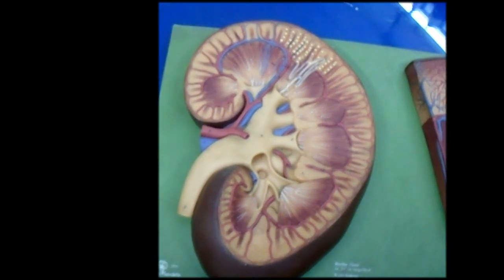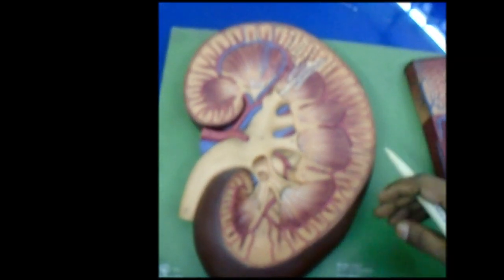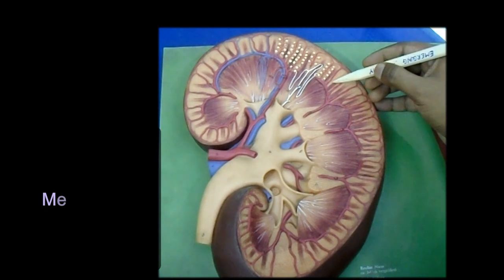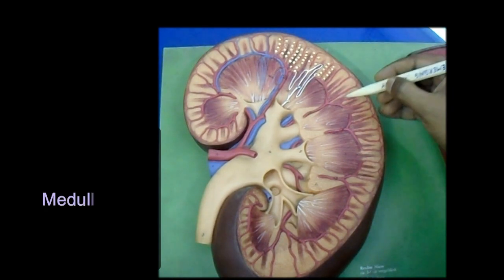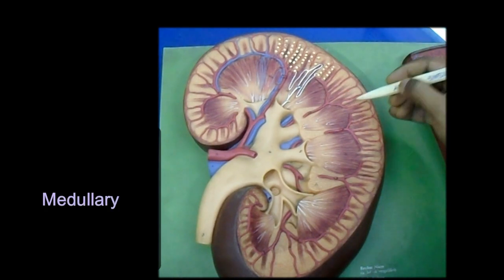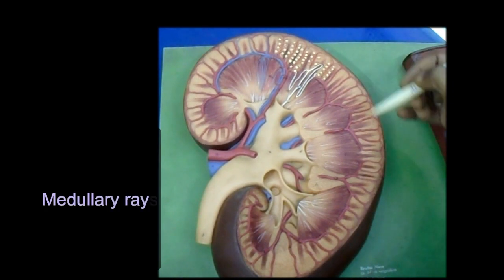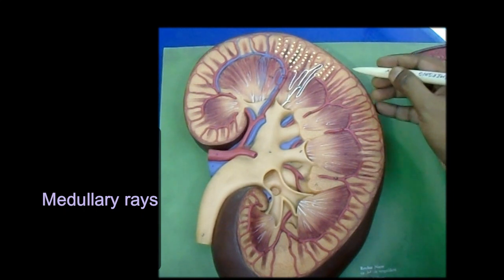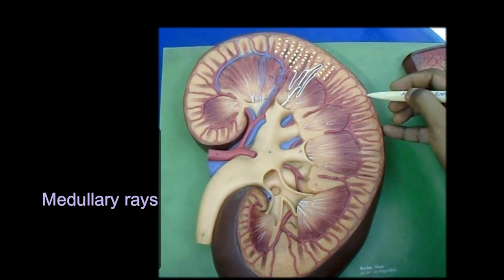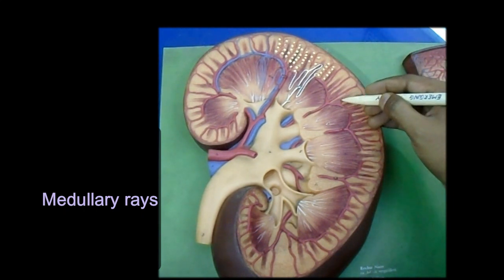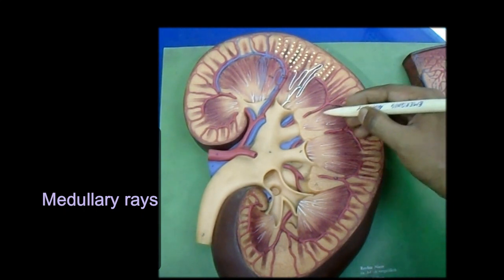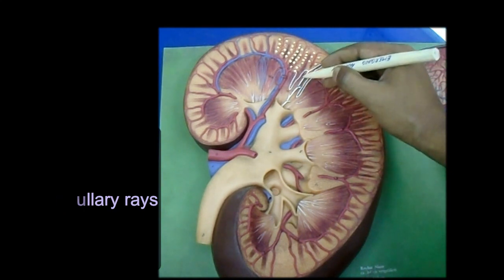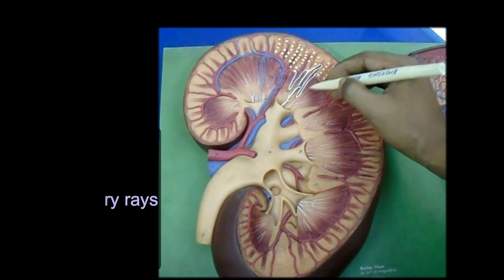To recapitulate: the medullary rays are striated conical masses. The apex of each is directed towards the surface of the kidney, and its base is continuous with the striation of the medulla.